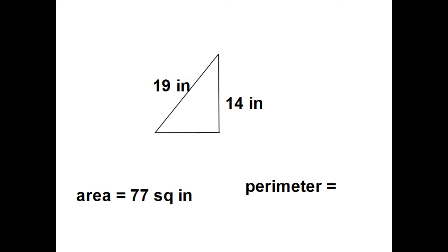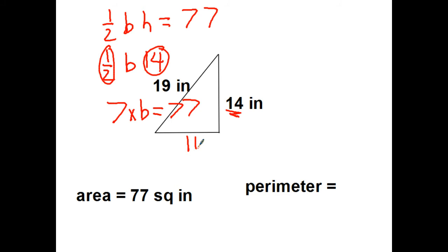You stop the video and try it out. Half the base times the height equals 77 square inches. My height is 14. So half the base times 14. Half of 14 is 7. So I got 7 times the base equals 77. So this side must be 11.